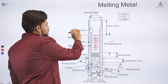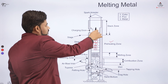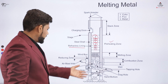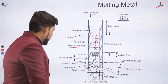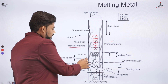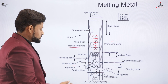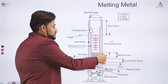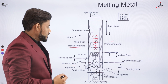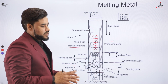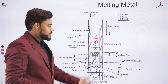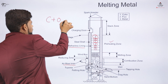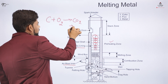From the charging zone, we pour in the metal, then the flux, then the coke. The furnace is fired with coal and there is an air blast inlet. From this air blast inlet, air is provided that creates combustion. In the combustion zone, melting of metal begins, and the major reaction occurring is: C + O₂ → CO₂ + heat.